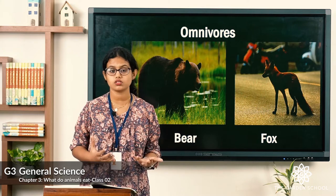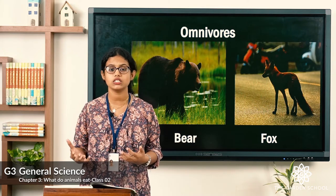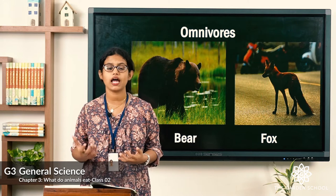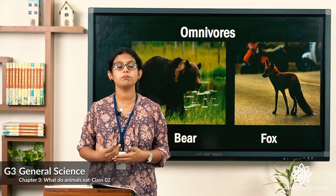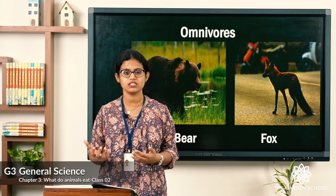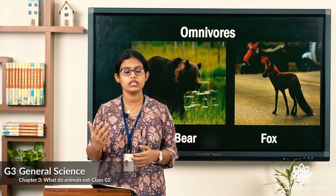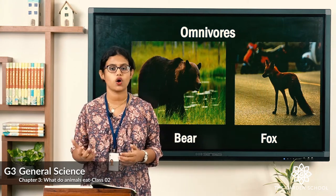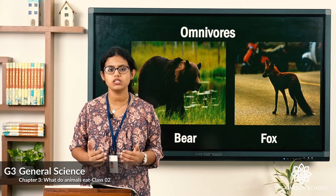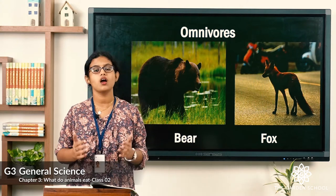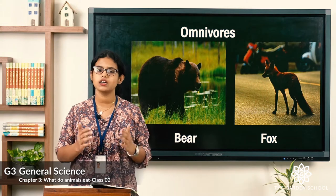Fox eats fruits and vegetables, and even eats other animals like frogs. Even peacock eats plant seeds and lizards and other insects. So omnivorous animals are animals which eat both plants and animals.